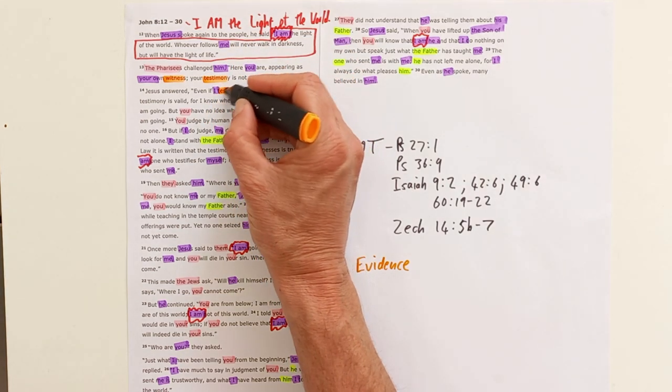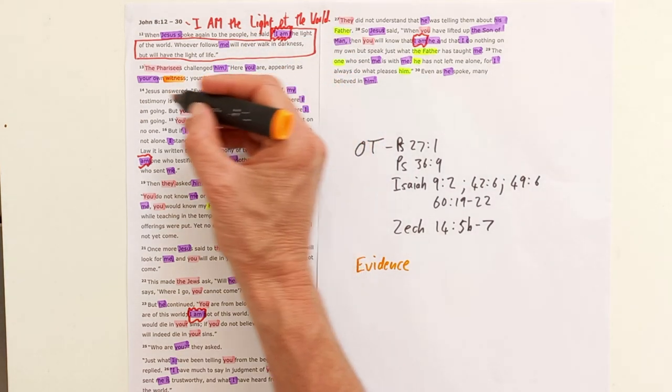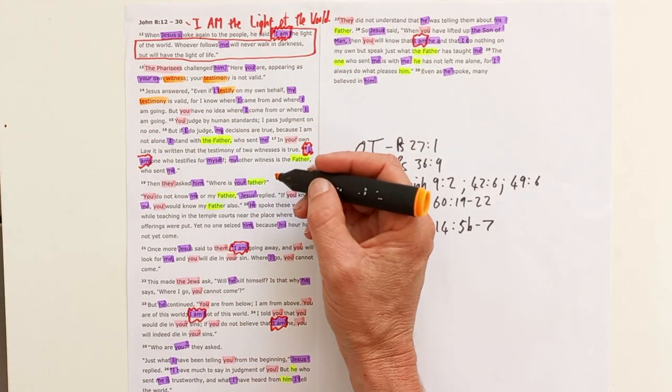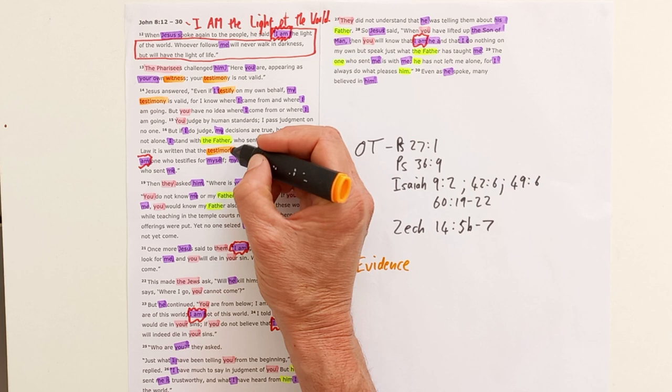They're questioning him whether this evidence that he's giving, saying that he's the light of the world, is that evidence true? Can his testimony be trusted?